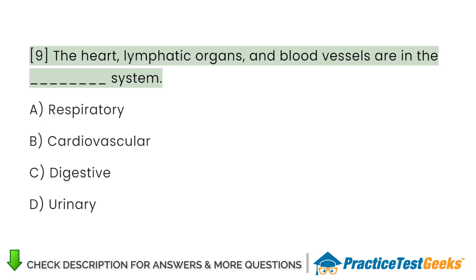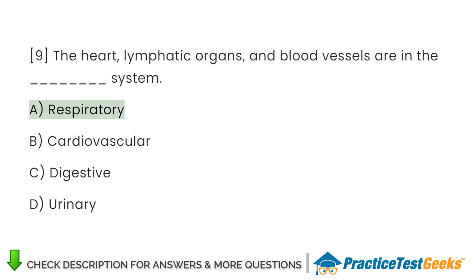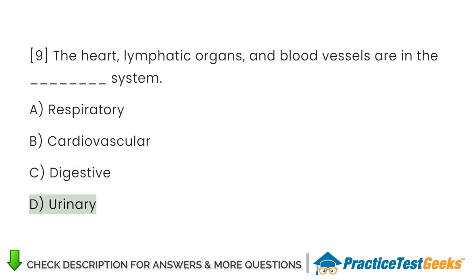The heart, lymphatic organs, and blood vessels are in the system. A. Respiratory. B. Cardiovascular. C. Digestive. D. Urinary.